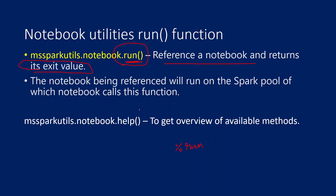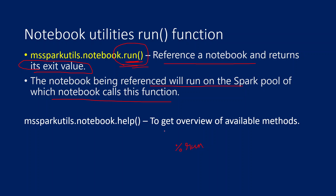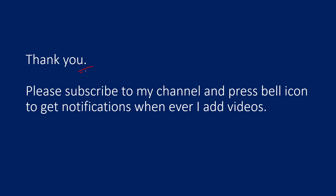The notebook being referred will run on the Spark pool of whichever notebook calls this function. So since notebook1 is called from the demo notebook which runs on Spark pool 1, notebook1 will also run on Spark pool 1. Also remember, using the help function on the module you can list all available functions inside that module. I hope you enjoyed this video — please subscribe to my channel and press the bell icon to get notifications. Thank you so much.